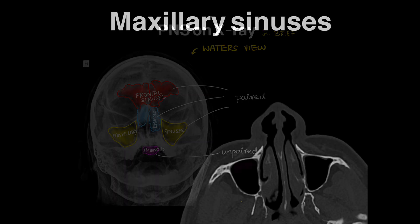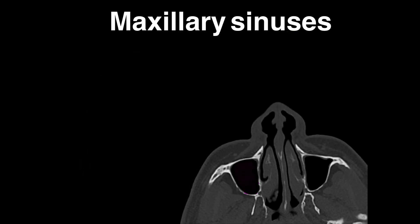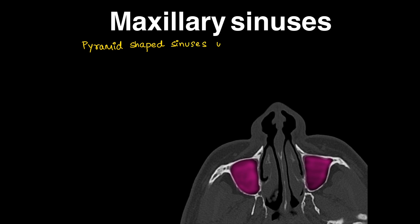So frontal, ethmoid, and maxillary are paired sinuses, and sphenoid is an unpaired sinus. Coming to the first sinus — the maxillary sinus — this is an axial CT image showing maxillary sinuses on either side of the nasal cavity. They are pyramid-shaped sinuses within the maxillary bone, one on the right and one on the left — so they are paired sinuses.